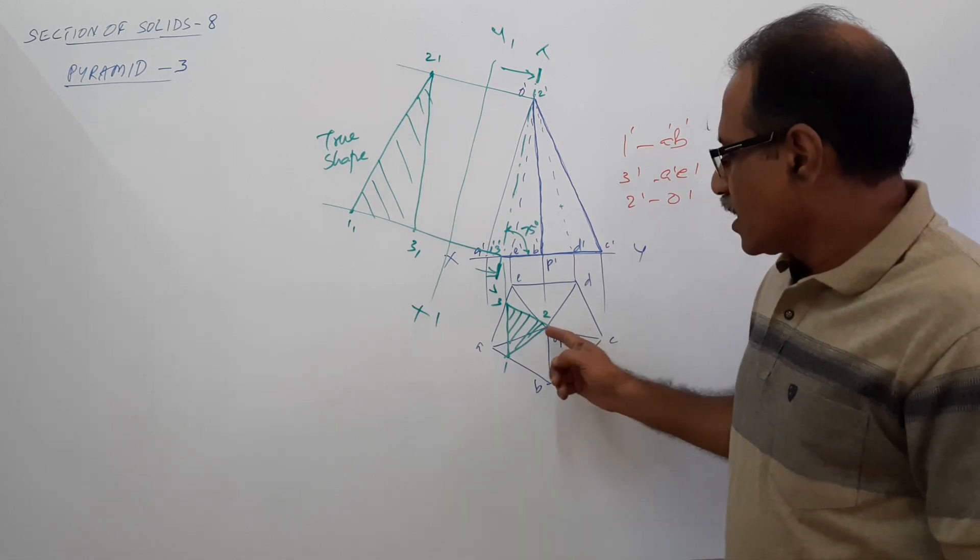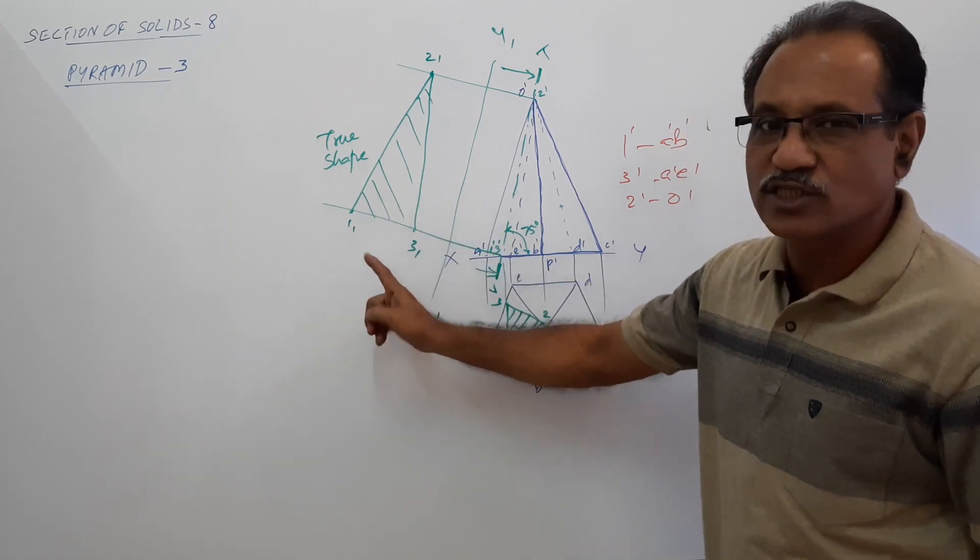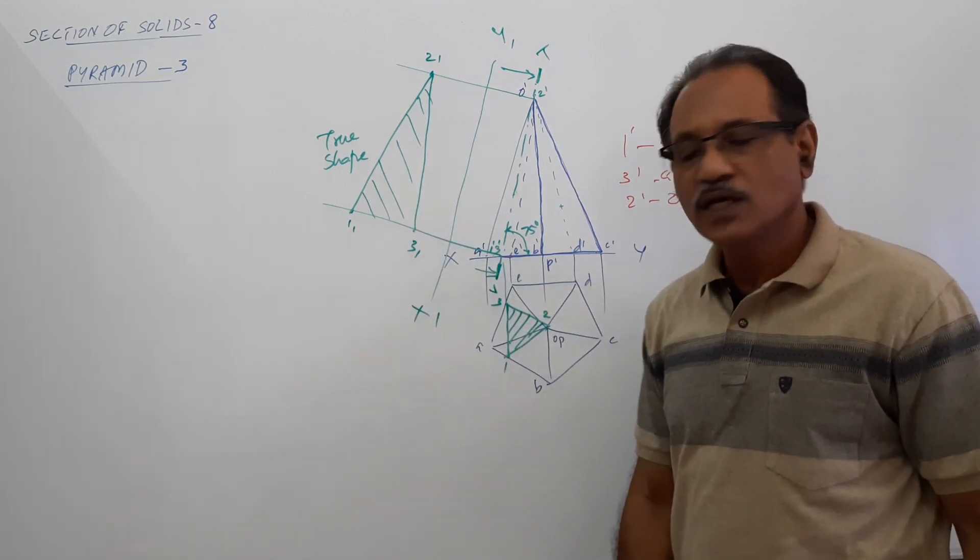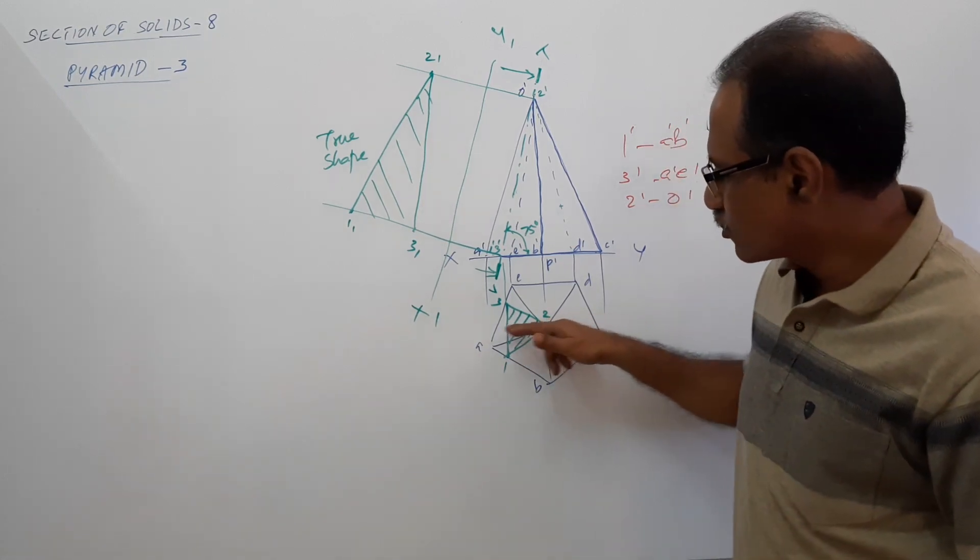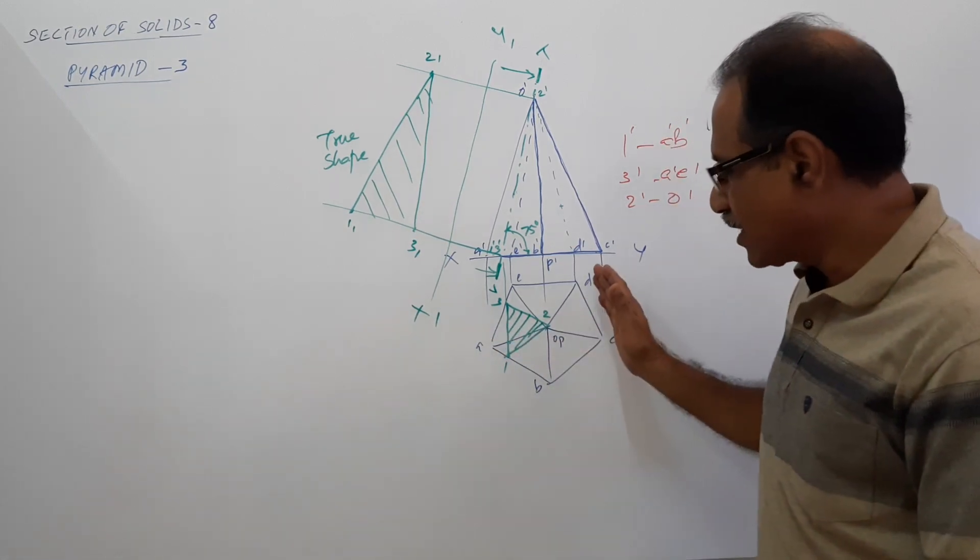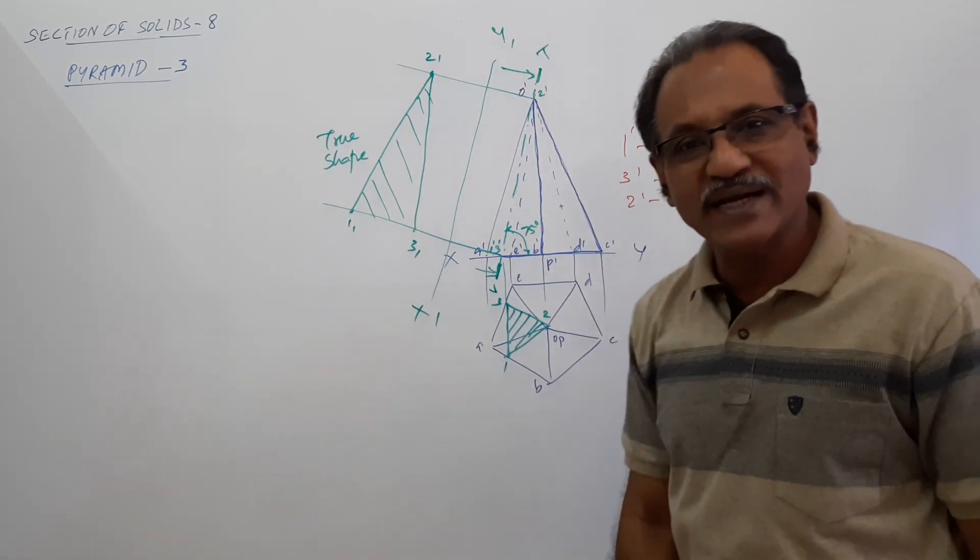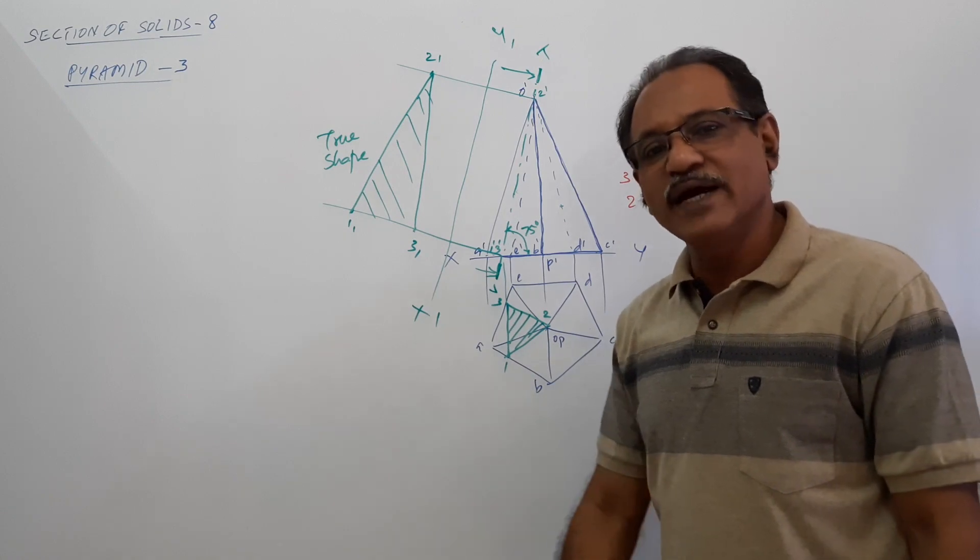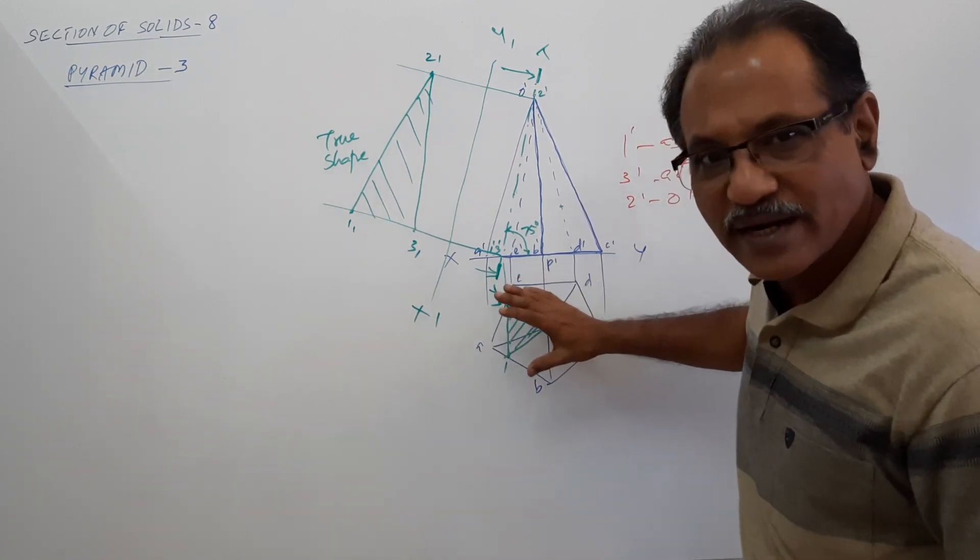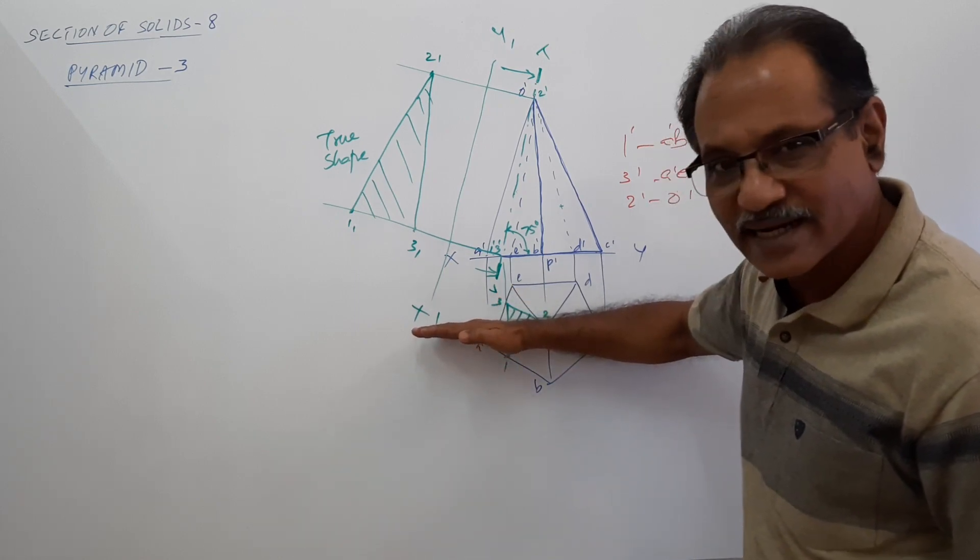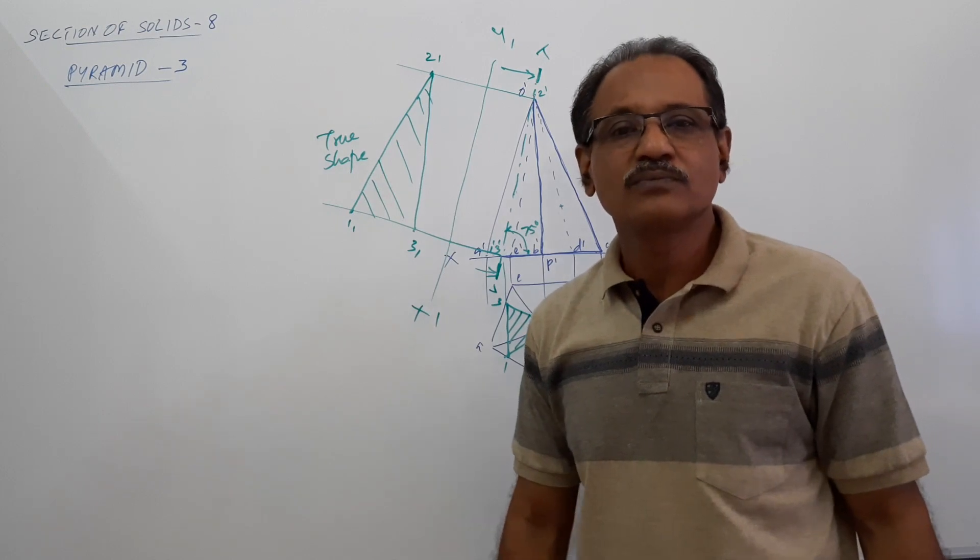Okay. Draw a horizontal line through O, then this distance and this distance are to be same for this to be an isosceles triangle. There is high probability that it is not an isosceles triangle. If only you draw a line, you can verify. But if the pyramid is kept with one side perpendicular to VP and then cut through the apex, the true shape definitely will be isosceles triangle. Because there is symmetry about this horizontal axis. You keep the pyramid in such a way that there is symmetry about the center line, then the true shape will be isosceles triangle.